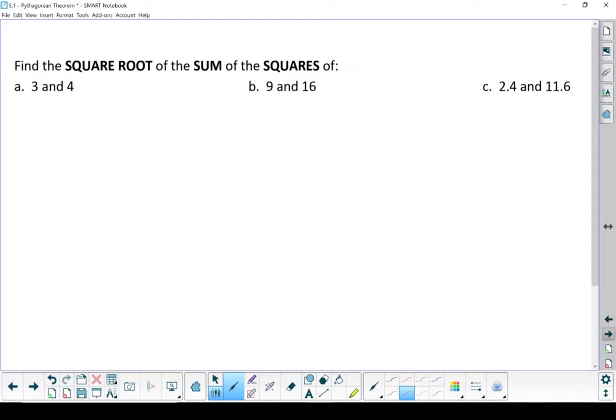Next one. Find the square root of the sum of squares. So essentially, I'm taking 3 squared plus 4 squared. That's the sum of squares. And I want to know what the square root of the whole thing is. So let's start with the inside. Start with those squares. 3 squared is 9, and 4 squared is 16. Add those two together. 9 plus 16 gives me 25. And the square root of 25 is 5. That one worked out nice and neat, but they don't all work out nice and neat.